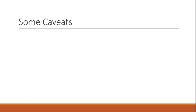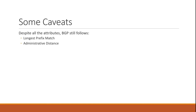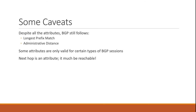Before we move on, I want to review some caveats with BGP attributes that may not seem obvious. First, despite the many attributes available, BGP still follows the rules of longest prefix match and administrative distance first. A longer prefix will win over any shorter prefix from any routing protocol, and a protocol with a lower administrative distance value may be preferred over a route learned via BGP. Second, some attributes are only advertised on certain types of sessions — local preference is local and won't be advertised on external BGP sessions, while MED can be advertised both internally and externally. A key attribute is the NextHop IP address, which must be reachable by the IGP for a route to be installed — it doesn't matter how you set the other attributes if there's no route to the specified NextHop address.